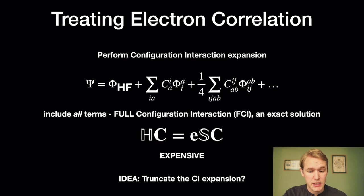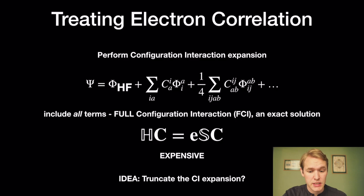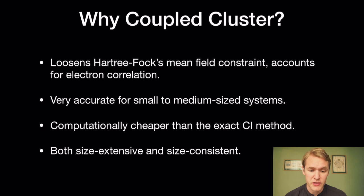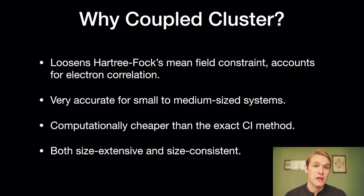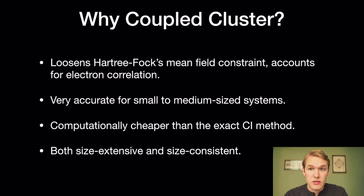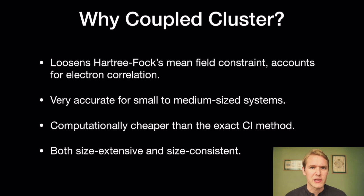This leads us to the coupled cluster method. Why do we use it? It loosens the Hartree-Fock mean-field constraint and accounts for electron correlation in a very nice way. It is very accurate for small to medium-sized systems, computationally cheaper than full CI, and — perhaps best of all — it is both size-extensive and size-consistent, meaning your model scales properly with the size of the system.